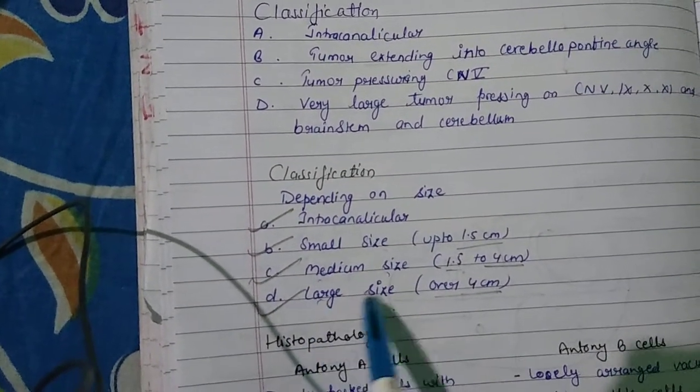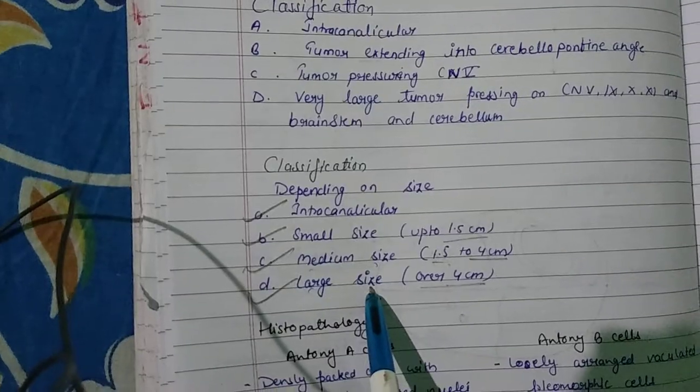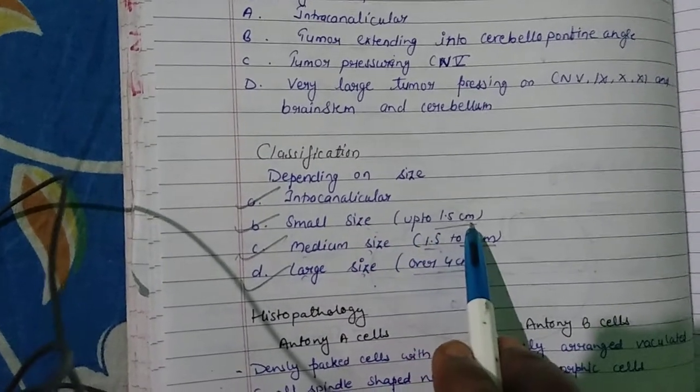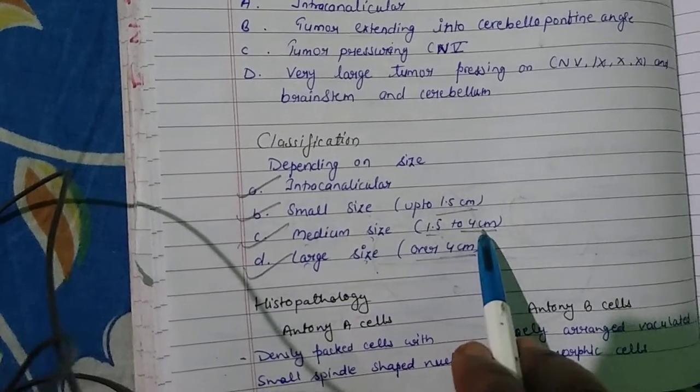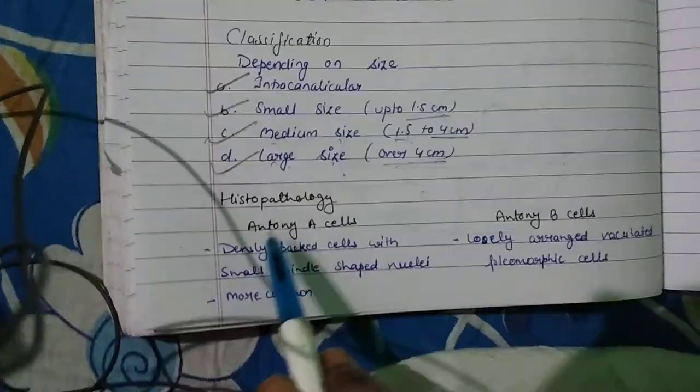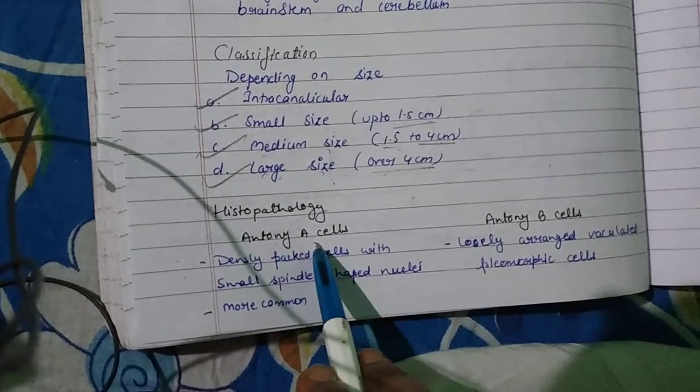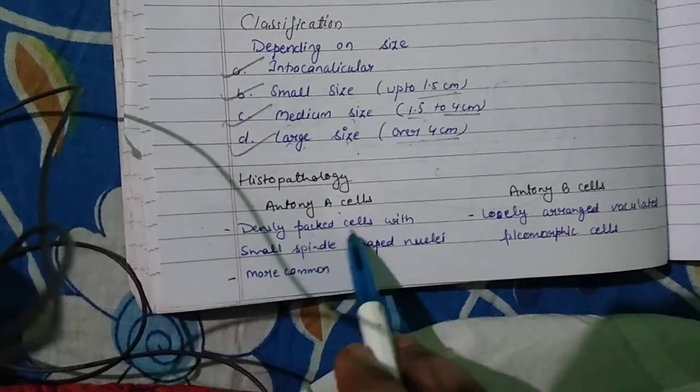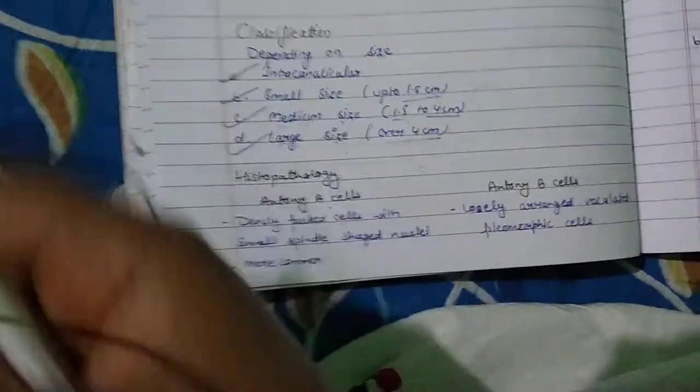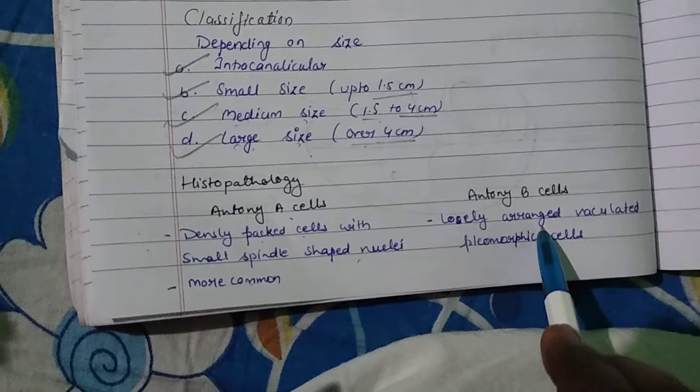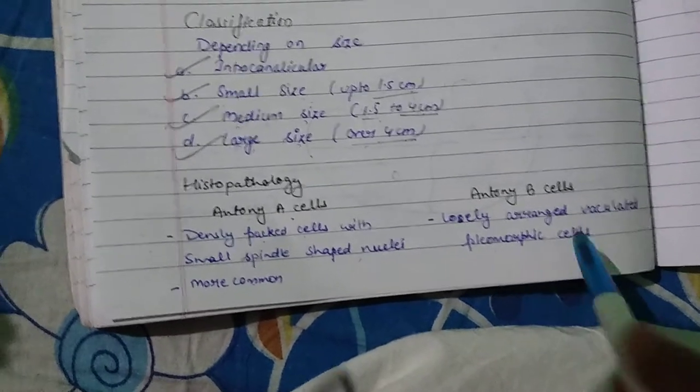Classification depending on size: intracanalicular, small size up to 1.5 cm, medium size 1.5 to 4 cm, large size over 4 cm. In histopathology, there are two types of cells: Antoni type A cells are densely packed cells with small spindle-shaped nuclei, while Antoni B cells are loosely arranged, vacuolated and pleomorphic cells.